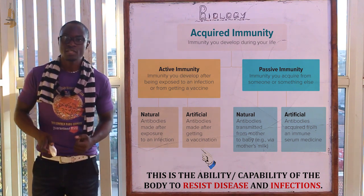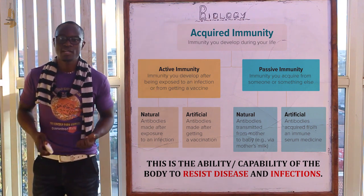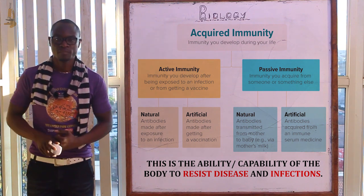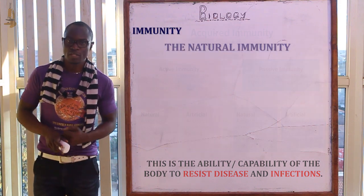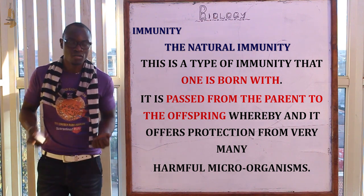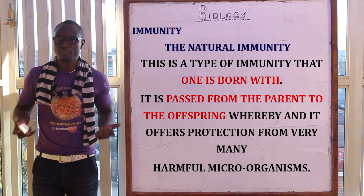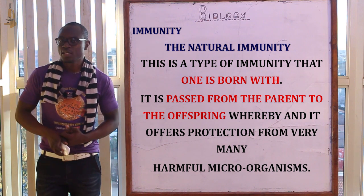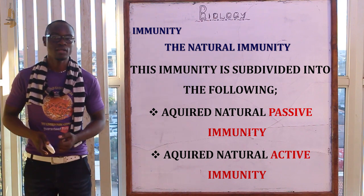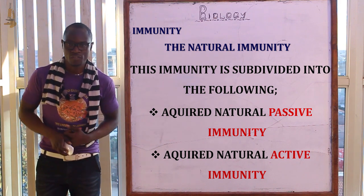Natural immunity is also called innate or inherited immunity, while artificial immunity is also called acquired immunity, since one can obtain it through injections from different vaccines. Natural immunity is further subdivided into two subtopics: the first is acquired natural passive immunity and the second is acquired natural active immunity.